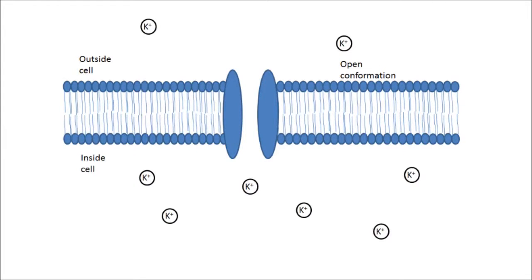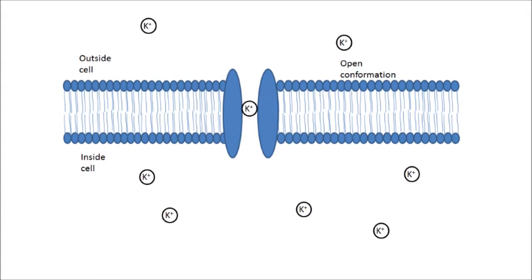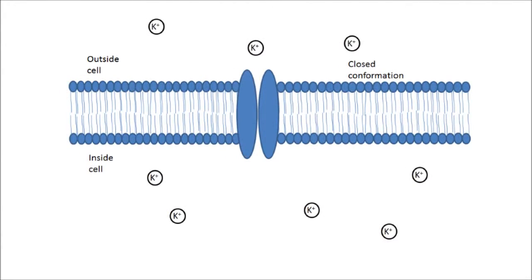The movement of these ions into and out of the cell is what causes the electrical activity in the heart. This then spreads across the cells in the heart from top to bottom, making the heart contract and pump blood.